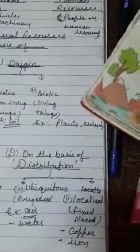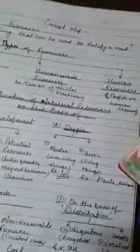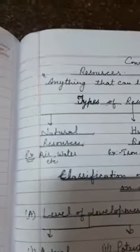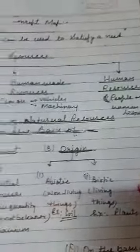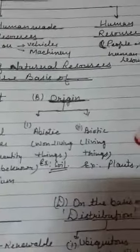Now I have completely described the resources. Types of resources: natural — provided by nature; human-made resources; and human resources. Now classification of natural resources on the basis of four: first is level of development — actual resources and potential resources; second on the basis of origin — abiotic and biotic; third is on the basis of stock — renewable resources and non-renewable resources; and fourth is on the basis of distribution — ubiquitous and localized. So I hope you will read them carefully and learn this concept map carefully. If you need any help, directly call on my personal number and ask any question. If you don't understand, you can ask any query about this concept map. Thank you.